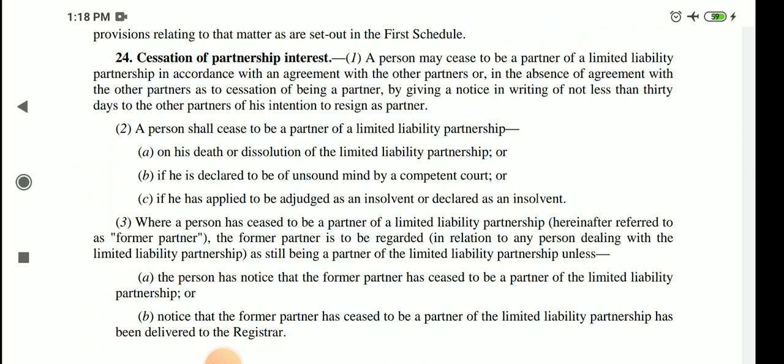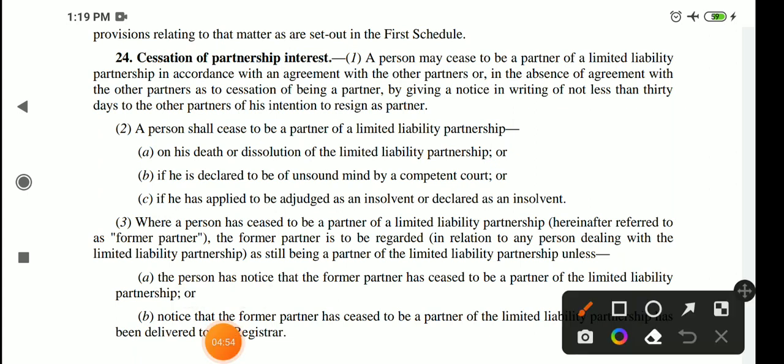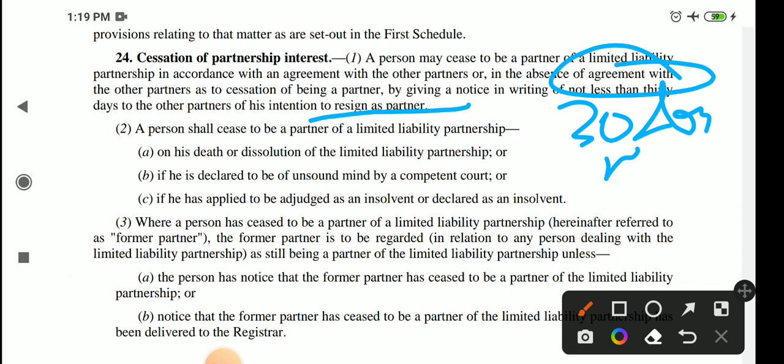Section number 24 is about cessation of partnership interest. A person who was a partner will cease to be a partner in LLP. If there is no agreement regarding cessation, then the manner of cessation will be followed — a partner must give a written notice to other partners of their intention to resign. Minimum 30 days' notice in writing must be given.